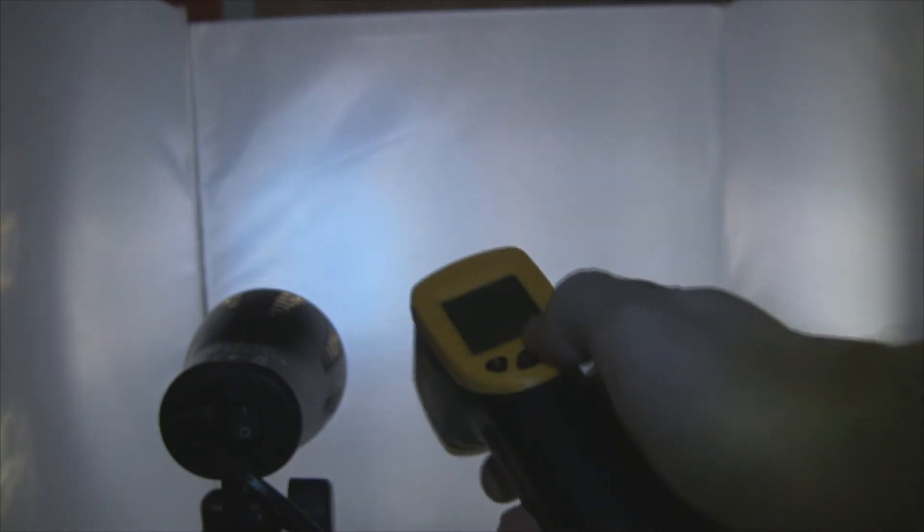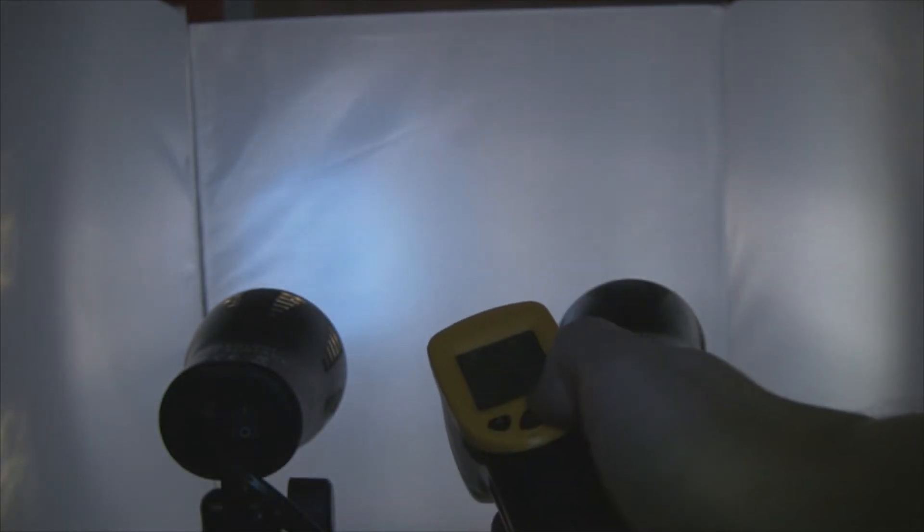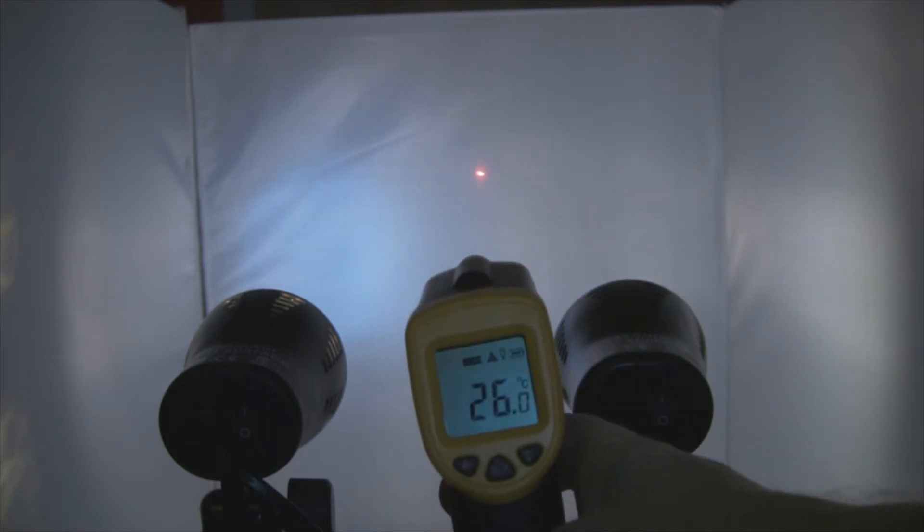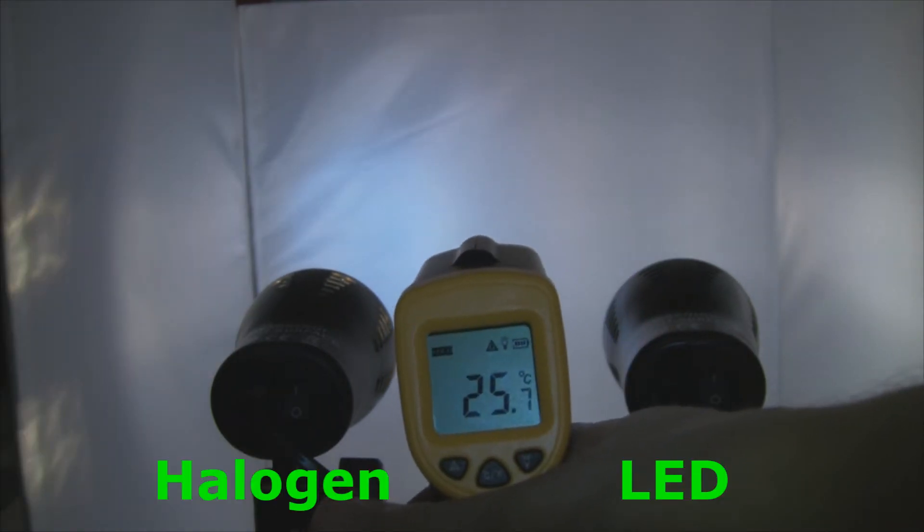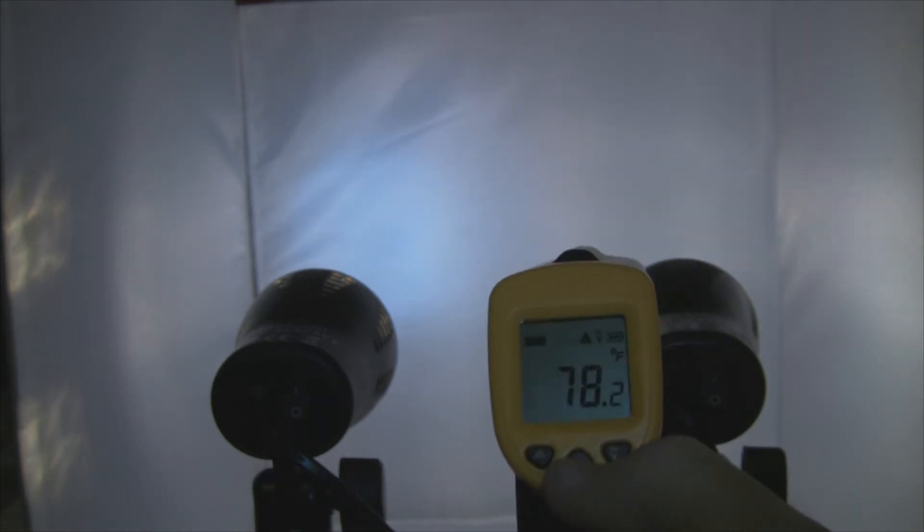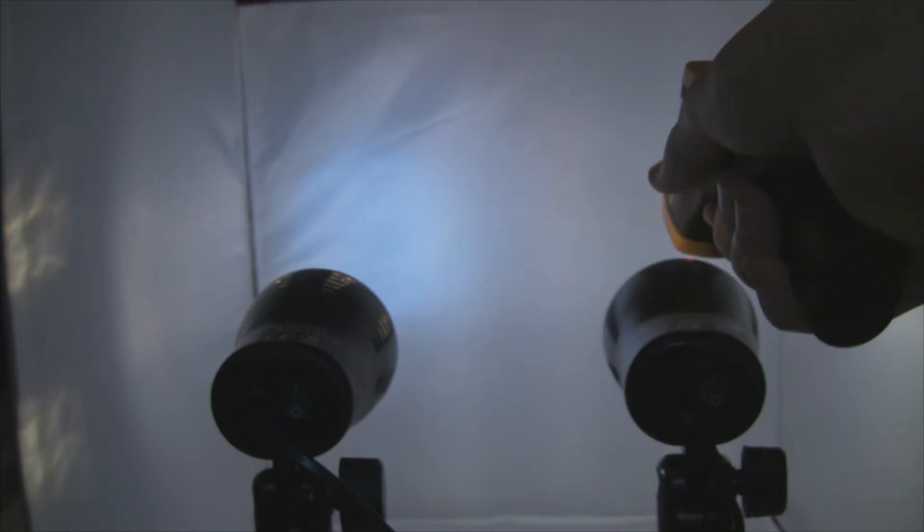And meet my new toy, this is an infrared thermometer. So we'll measure the temperatures, they are both the same way round as they were before. The ambient temperature of my white studio thing is about 25, 26 degrees Celsius, which is 78.2 degrees Fahrenheit. And we're going to compare the temperatures of the two lights.